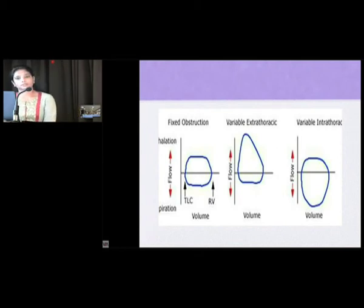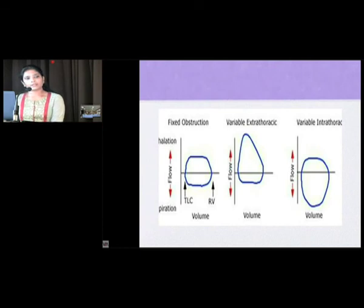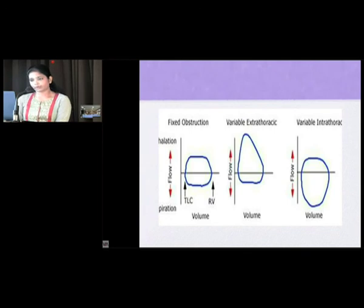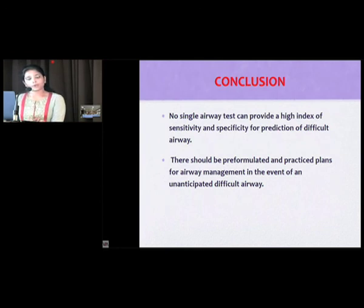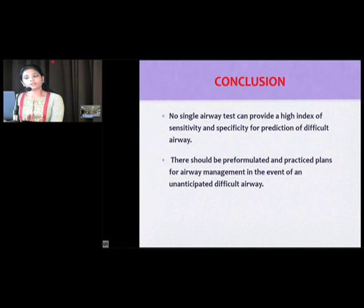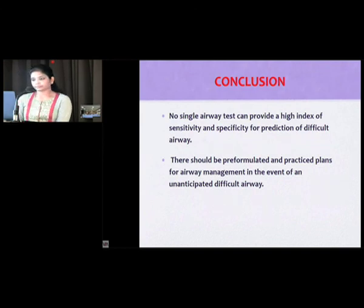Flow volume loops are not as good as CT for predicting difficult intubation, because they are taken with the patient supine at maximum inspiratory and expiratory efforts — CT scan is therefore a better predictor. In conclusion, no single airway test can provide a high index of sensitivity and specificity for prediction of a difficult airway. Even with proper airway assessment, an unanticipated difficult airway can still occur, so we should have pre-formulated and practiced plans for airway management in the event of an unanticipated difficult airway.